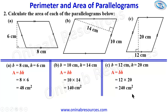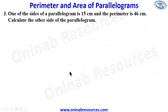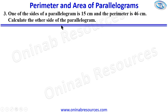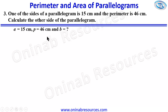Problem 3: One side of a parallelogram is 15 cm and the perimeter is 46 cm. Calculate the other side. In our solution, we take A = 15 cm and the perimeter P = 46 cm, meaning we are looking for B. The formula to find B is: B = (perimeter ÷ 2) − A.